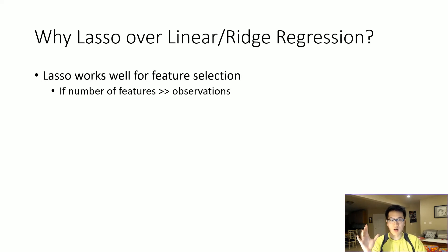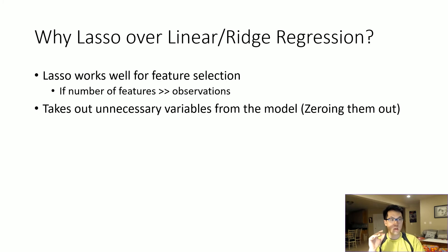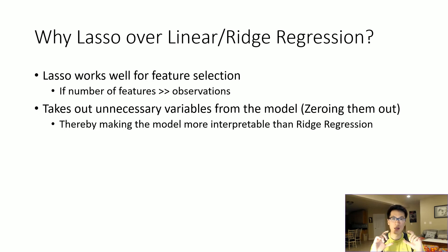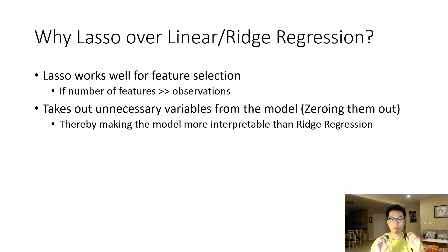But why would we use lasso over ridge? One of the really neat perks of using lasso instead of ridge is that it zeroes out the coefficients from the overall model, thereby taking out that specific feature from the overall model, thereby reducing the complexity.